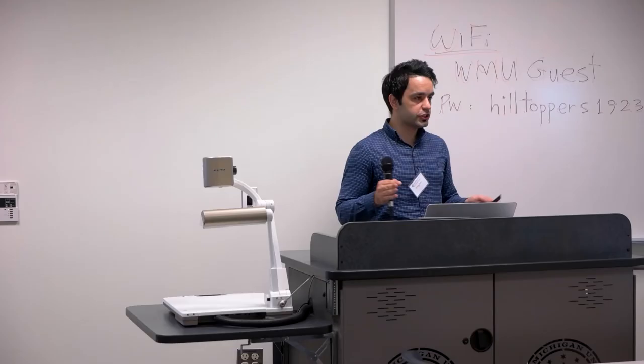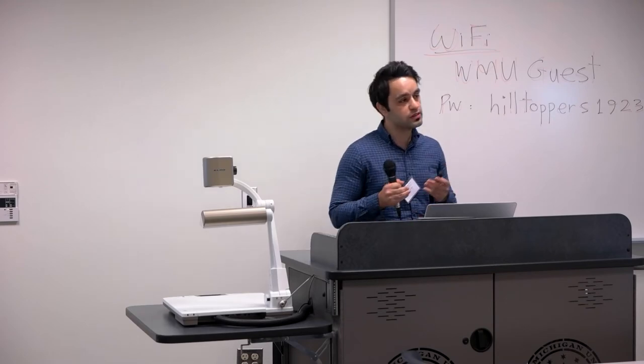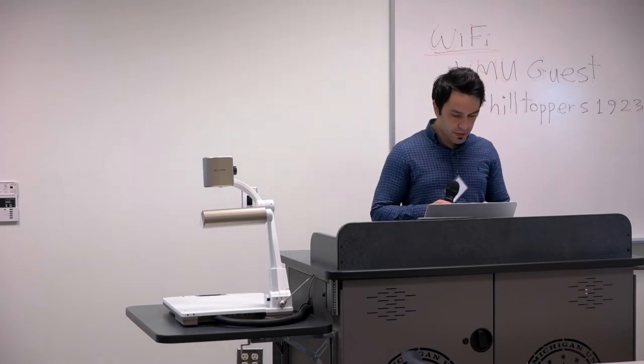This project is the continuation of Phase 1, which was done in 2017. In Phase 1, there are three streams of data: the OD pair based on household survey, driver behavioral characteristics, and the final destination, which determined the type of activity drivers were involved in. Based on these three streams of data, we estimate some parameters such as arrival pattern, willingness to walk of the driver, and dwell time. We add uncertainty to these parameters.